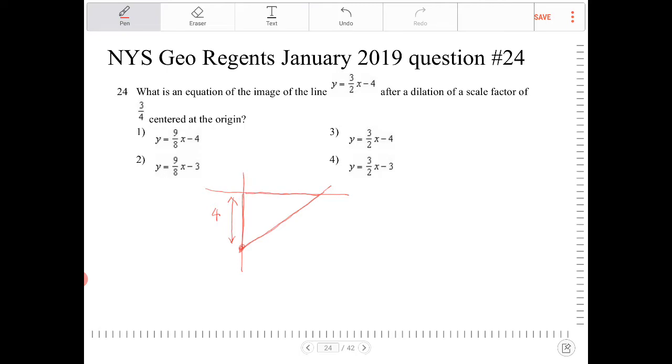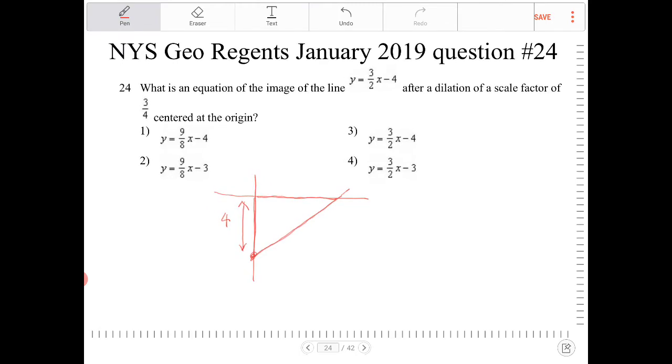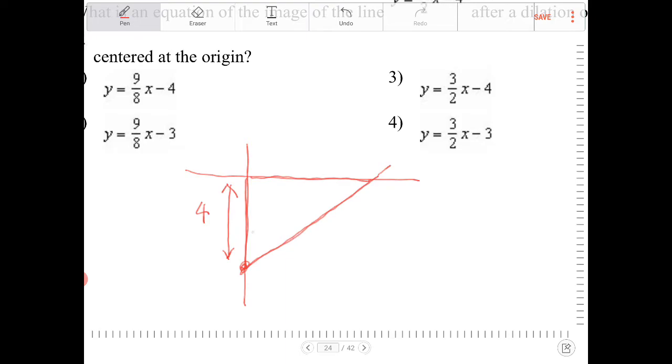So when we dilate this triangle by a factor of 3 fourths, what's going to happen is this is going to shrink, right? Our new line is going to be somewhere that's going to be smaller because the scale factor is below 1. Well, how much smaller is it?